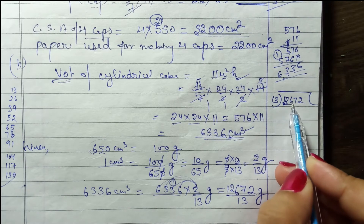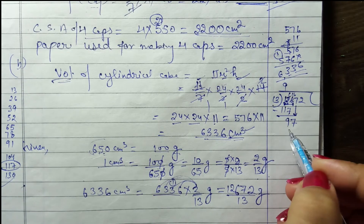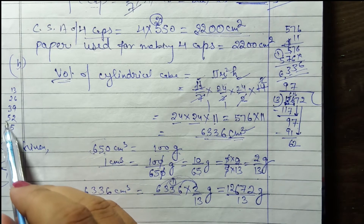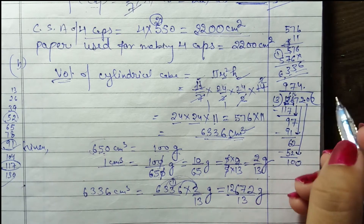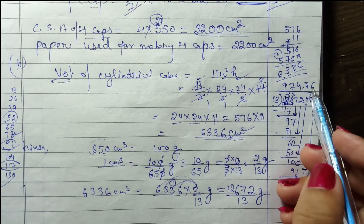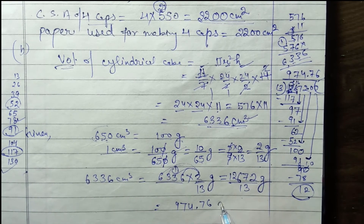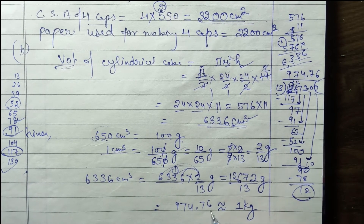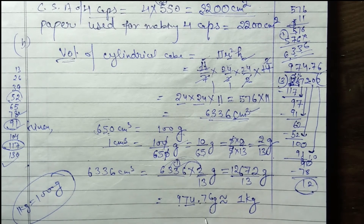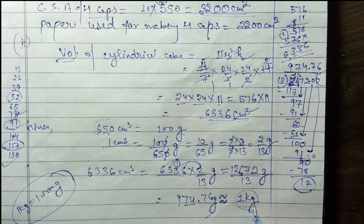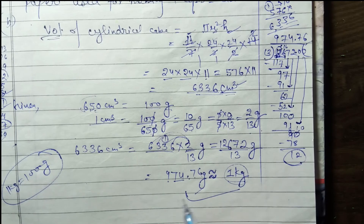126 mein se 13 × 9 = 117, remainder 97. 13 × 7 = 91, remainder 62. 13 × 4 = 52, remainder 10. 2 decimal places tak: 100 mein 13 × 7 = 91, remainder 90. 13 × 6 = 78, remainder 12. Toh approximately 974.76 grams aa raha hai, jo approximately 1 kg hoga. 1 kg = 1000 grams, hamare paas 974.76 grams hai approximately, toh 1 kg ka cake order kiya jaayega. Yeh is case study ke A aur B part ke answers hain.